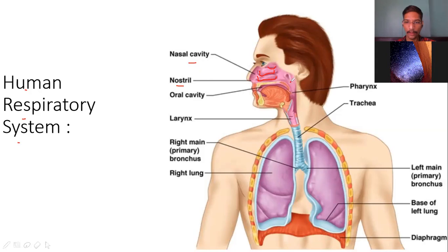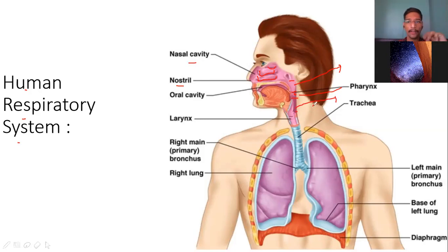This region is called nasopharynx, this region is oropharynx, and this region is called laryngopharynx. So there are three portions in the pharynx: the upper one is nasopharynx, then oropharynx, then laryngopharynx. So the pharynx is divided into three regions.